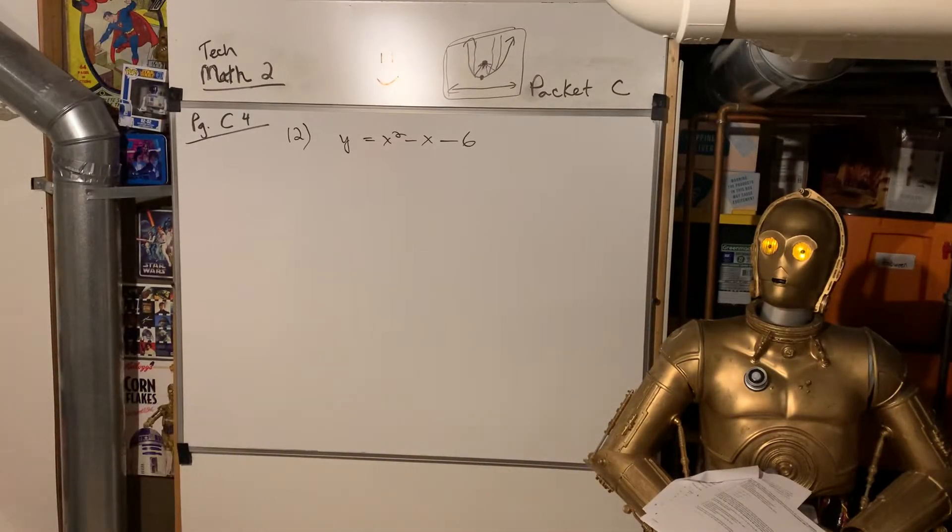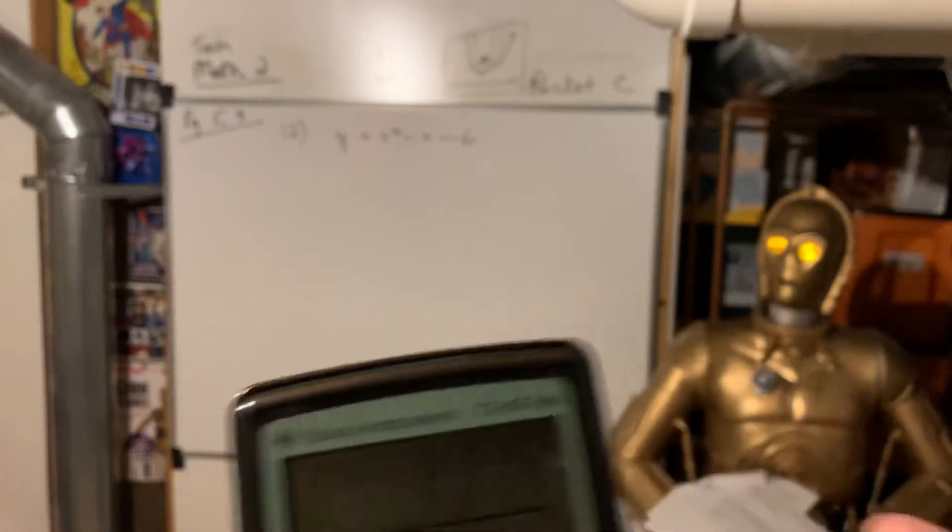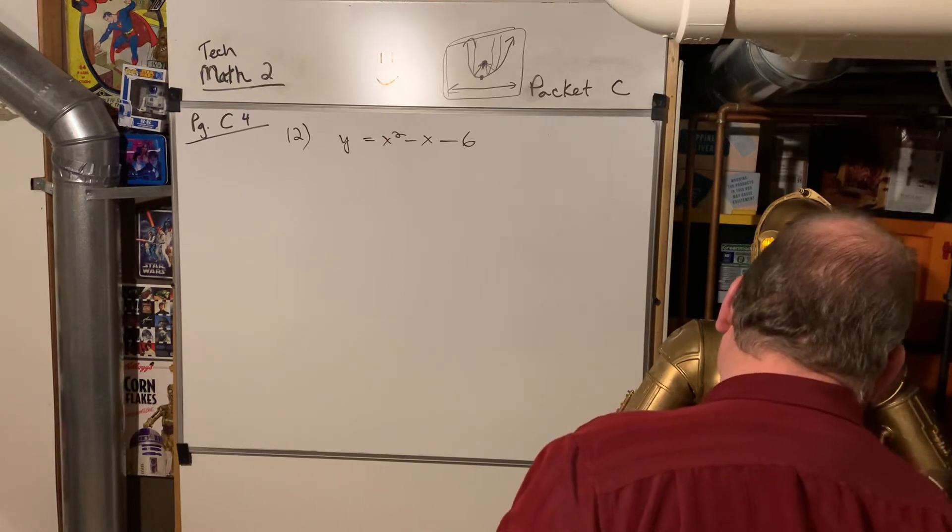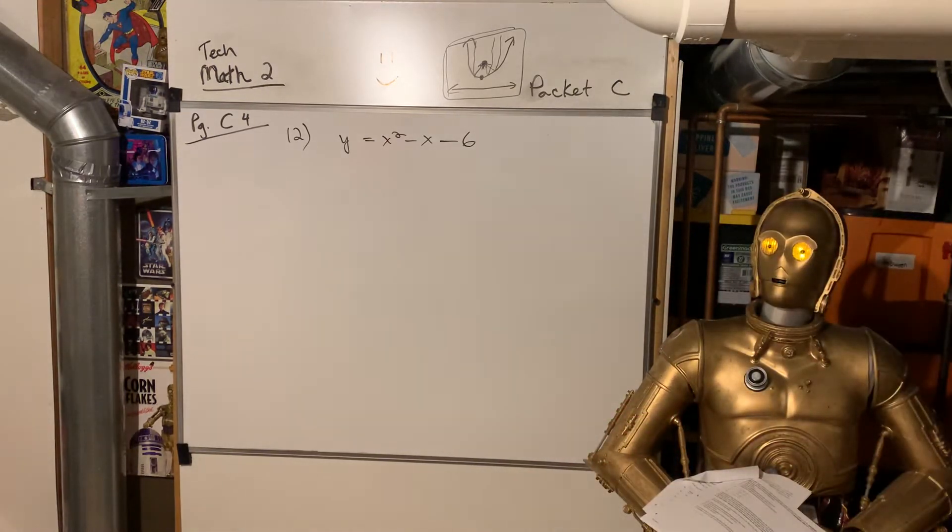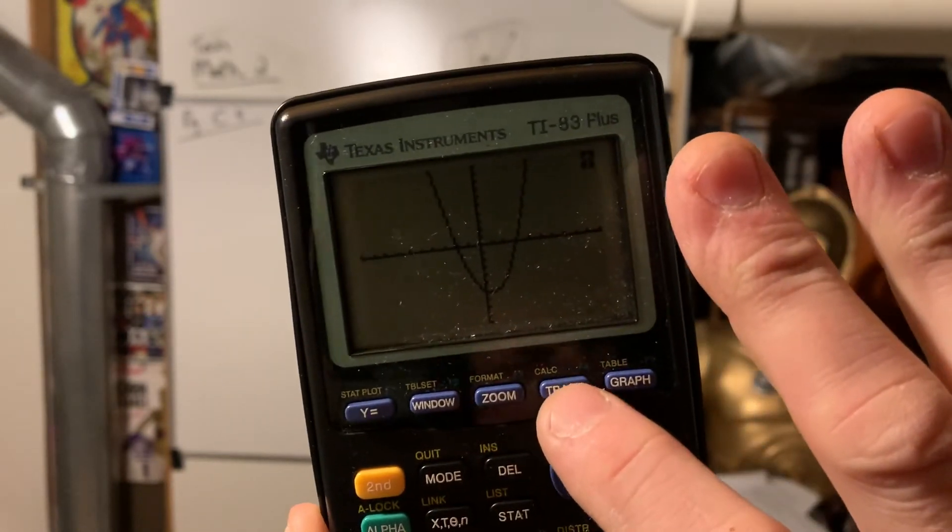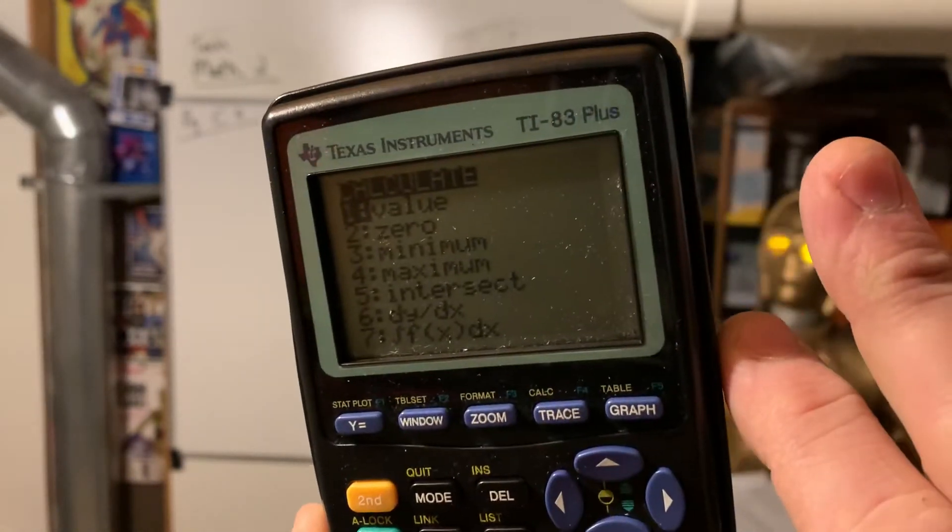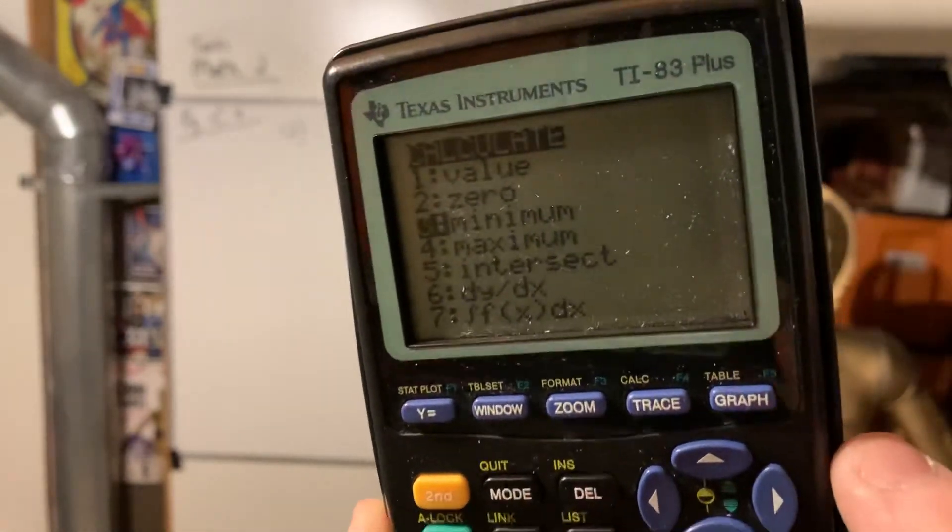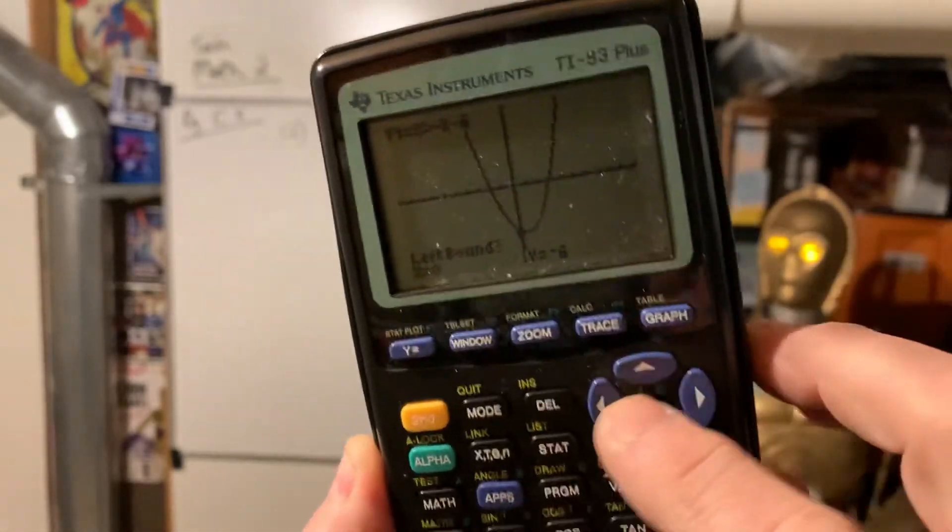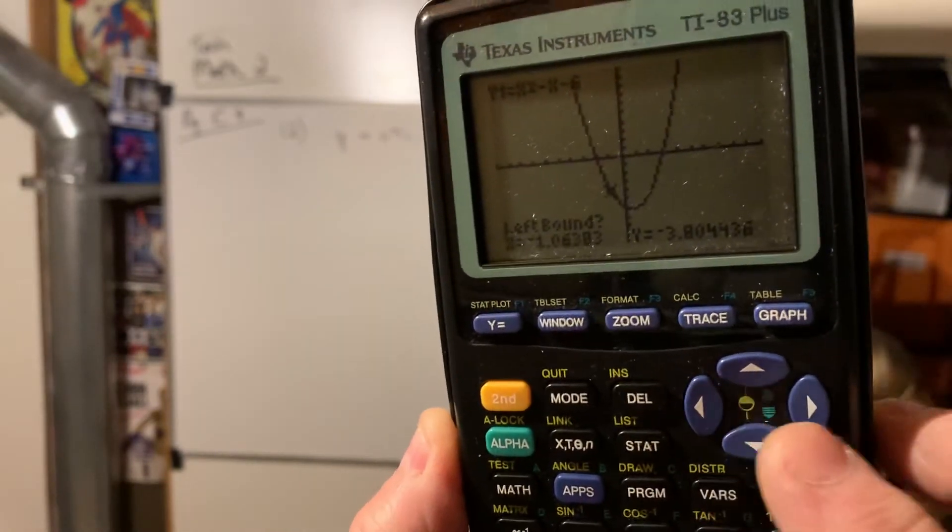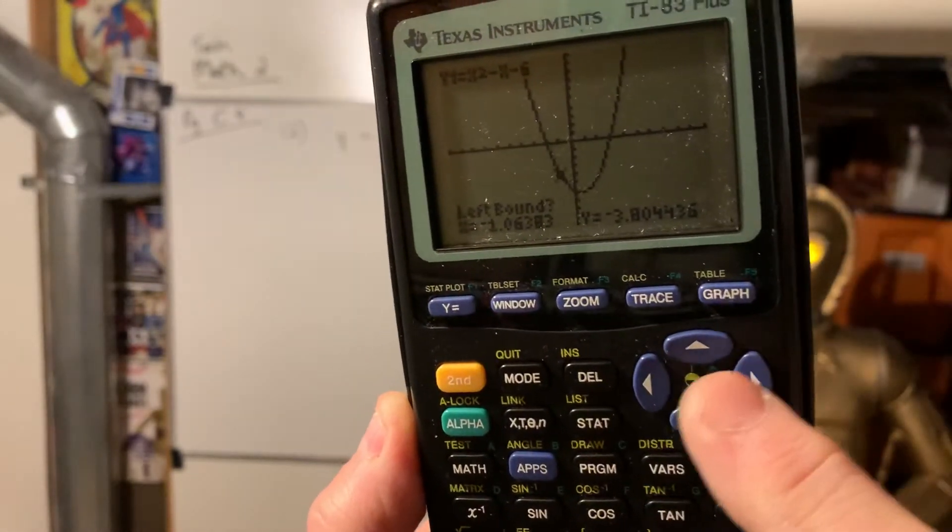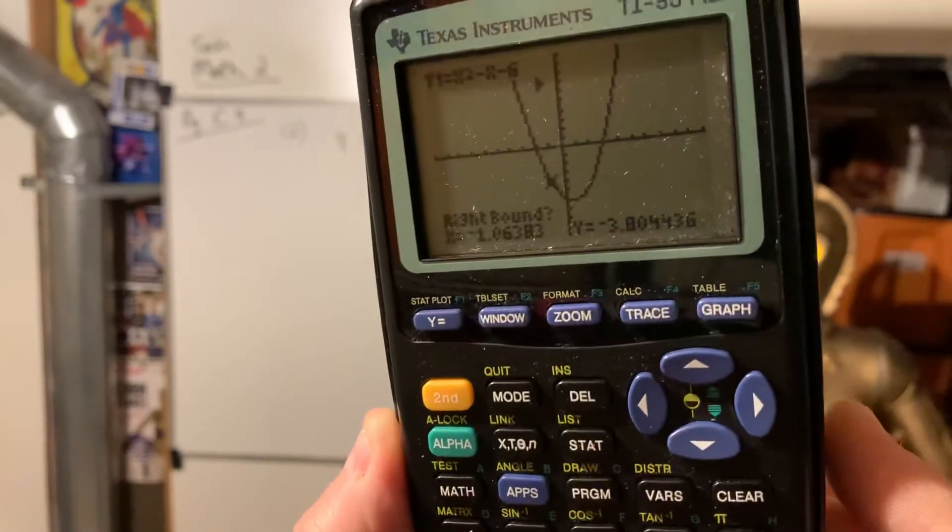Now let's say we want to find the minimum value for y. To find the minimum, that's the vertex. What you do is you do second and then trace. That's calculate. And now we want a minimum. So we go down to minimum, that's the third one down, and then you hit enter. Now you have to play a little game. It's the left boundary and the right boundary. So you make sure you're on the left side of the zero by right or left clicking these buttons. I clicked a few to the left. I hit enter. That is the left boundary.